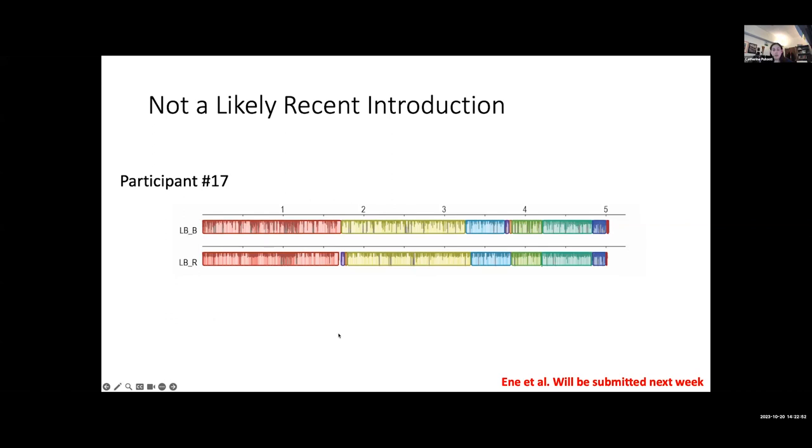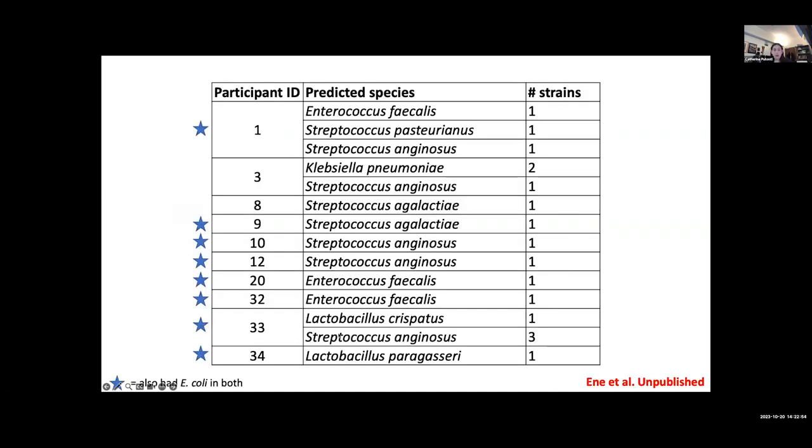I should note that thus far I've really focused on E. coli, but we have also been able to identify species of different bacterial members of the urobiome that are found in both rectal swab and bladder samples. Here's just listing a few of those, with those particular participants that had E. coli in both their rectal swab and their urine sample indicated with the blue stars.